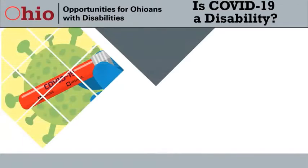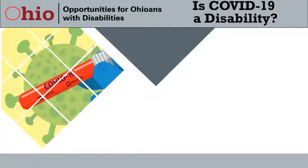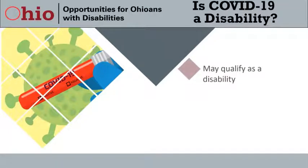Regarding the long-term effects of COVID-19, just like with age and pregnancy, the ADA does not have a list of conditions that automatically qualify as a disability. Having COVID-19 or the long-term effects related to having COVID-19 may or may not qualify an individual as having a disability. The Department of Justice and the Department of Health and Human Services did issue a joint guidance indicating that the long-term effects of COVID-19 can be a disability under the ADA.